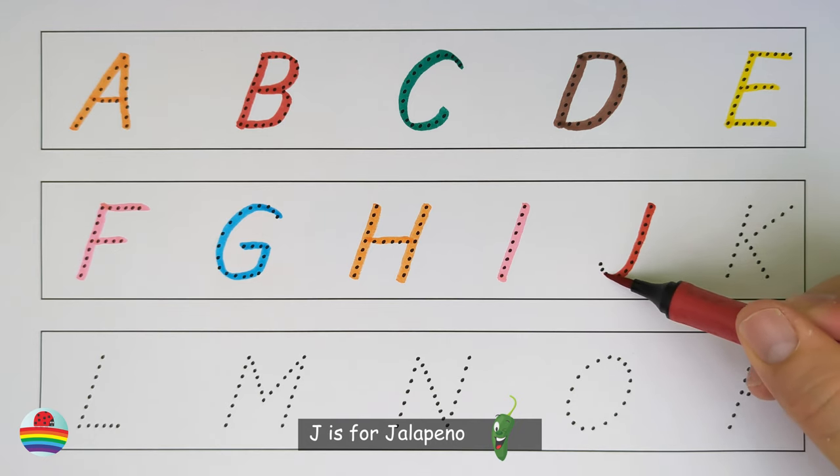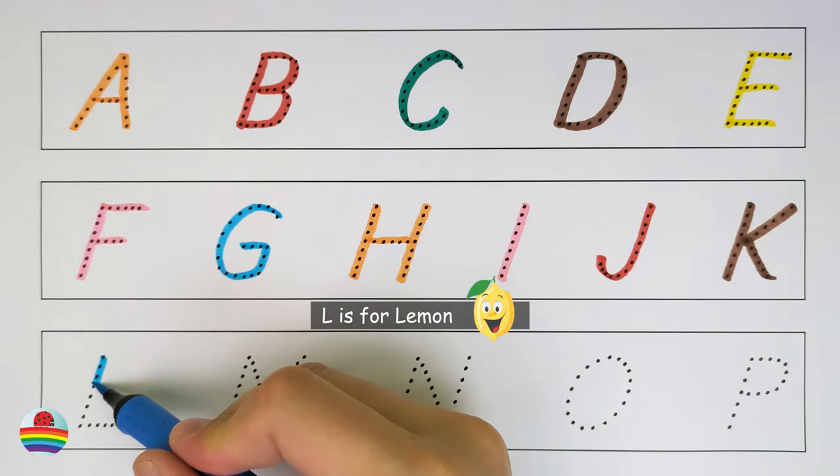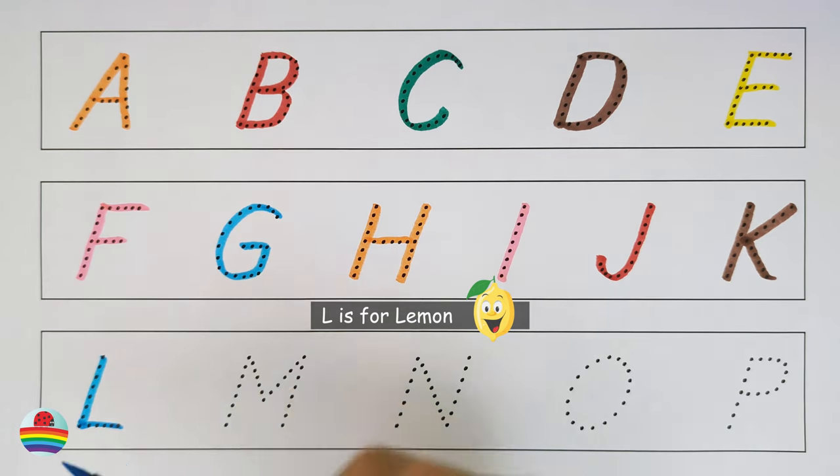J. J is for jalapeno. K. K is for kiwi. L. L is for lemon.